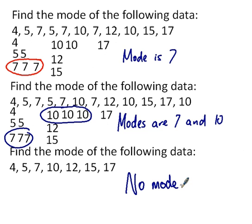So to recap: we go through the data set and look to see which number appears the most. We can do that methodically by writing them out in little groups and then looking to see which one appeared the most. If two numbers appear the most and equally frequently — like the 7 came up three times and the 10 came up just as many times — it means there are two modes. And if all numbers have a frequency of 1, then there is no mode.